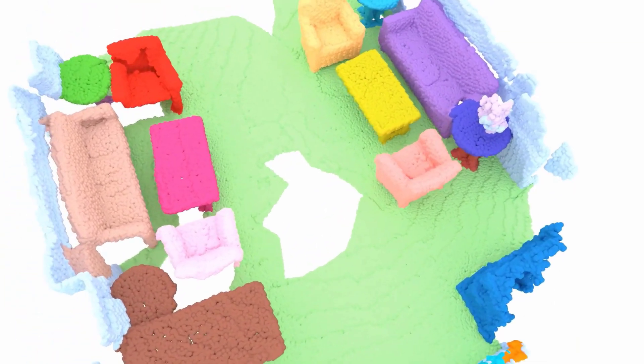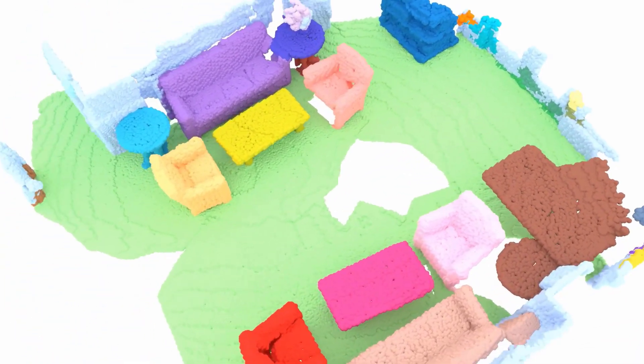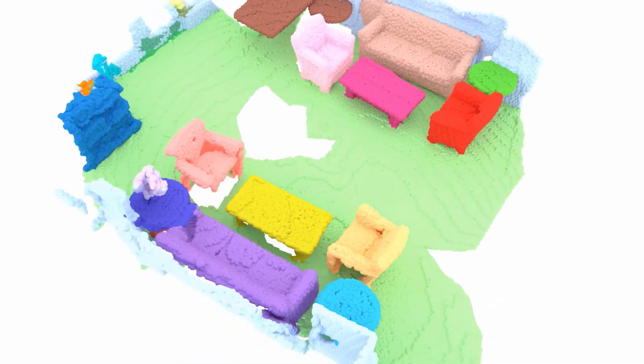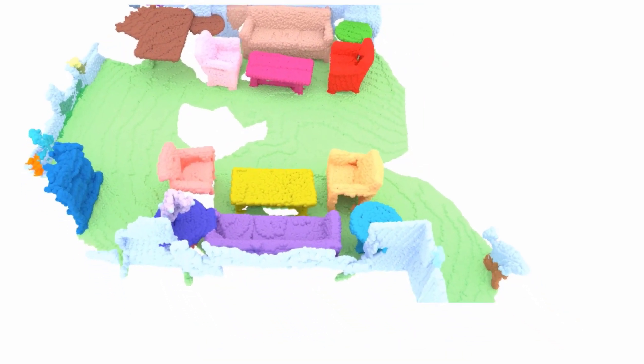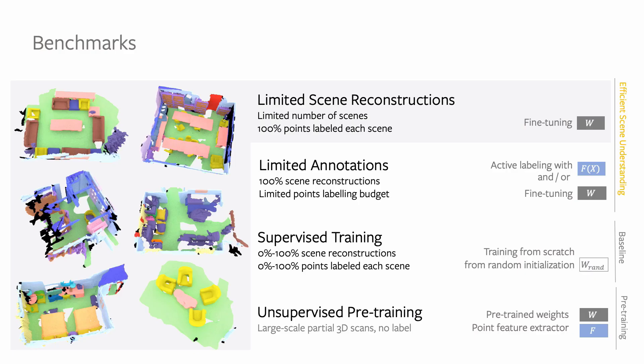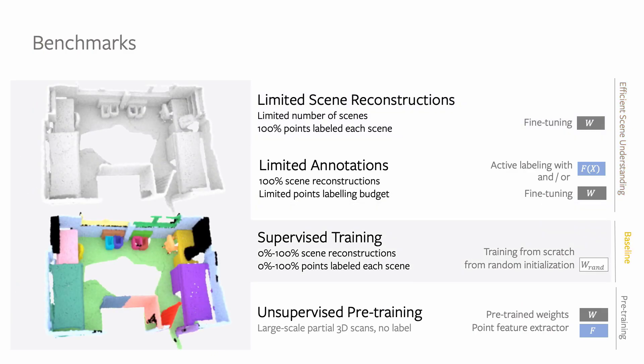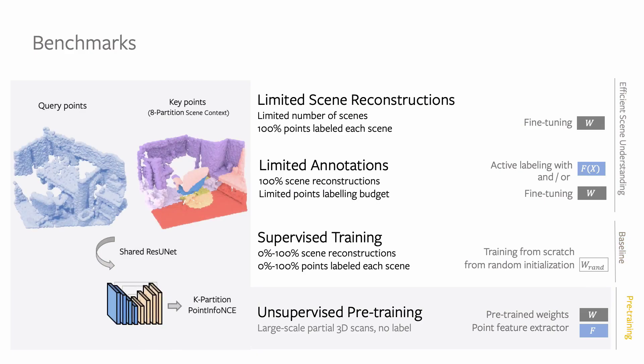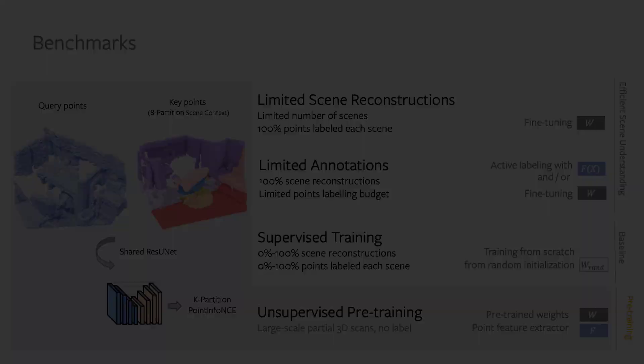We show instance segmentation from our model trained with only a few annotated points. In fact, our method uses only 20 point labels per scene, which is less than 0.1% of all points, to make these predictions. We set up two benchmarks for data-efficient 3D scene understanding. We provide relevant baselines and explore a solution based on unsupervised pre-training.